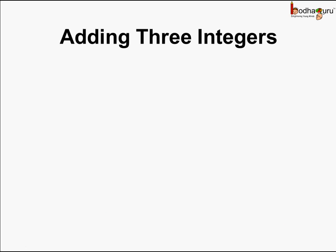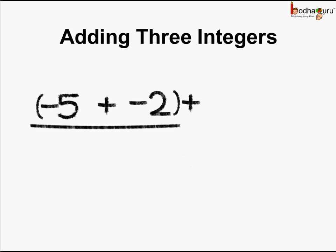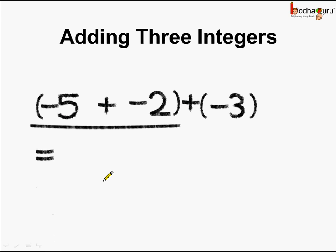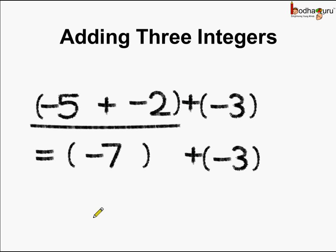Let us try adding this same expression. Here, first we will add minus 5 and minus 2, and then we will add minus 3 to it. So minus 5 plus minus 2 — if we add these two integers, the answer is minus 7, to which we need to add minus 3. Minus 7 plus minus 3. The answer is again minus 10.